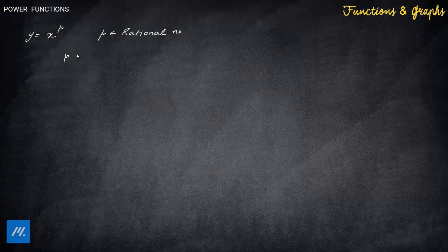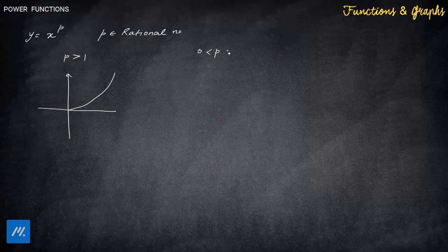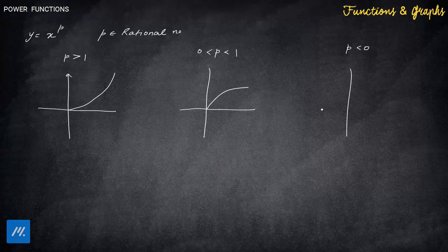Let me show you the answers to remember first, and then I'll explain the logic. I'm drawing the graph in the first quadrant. If p is greater than 1, the graph will be concave upward. If p lies between 0 and 1, the graph in the first quadrant will be concave downward. And if p is less than 0, the graph will curve upward again like this.